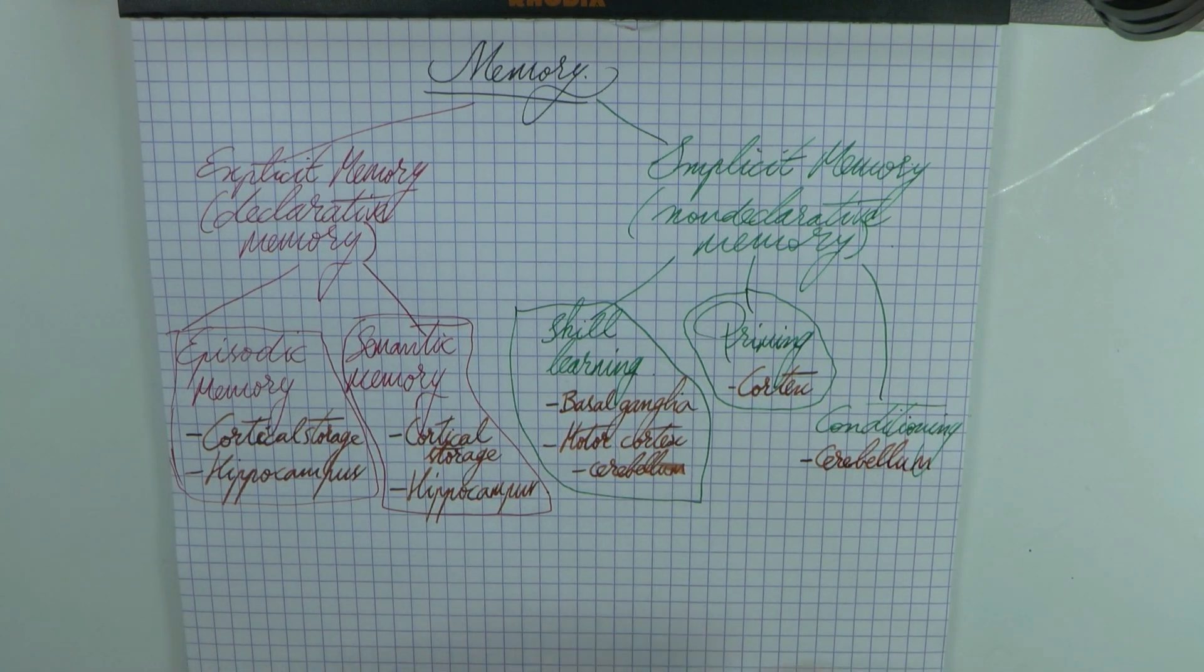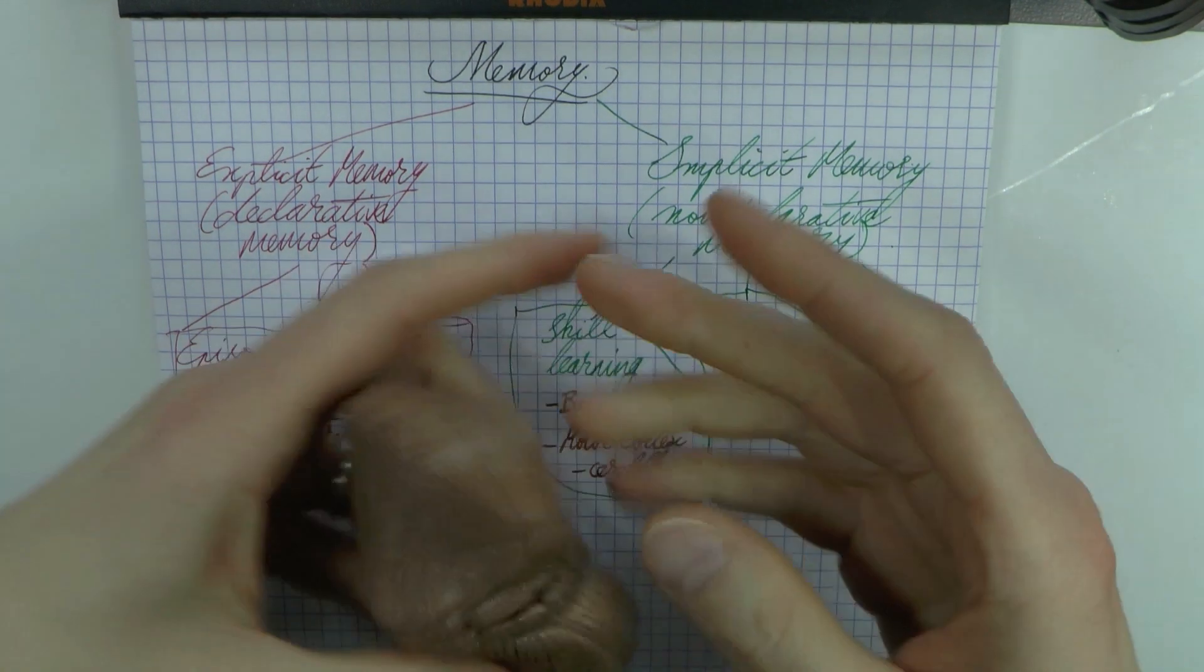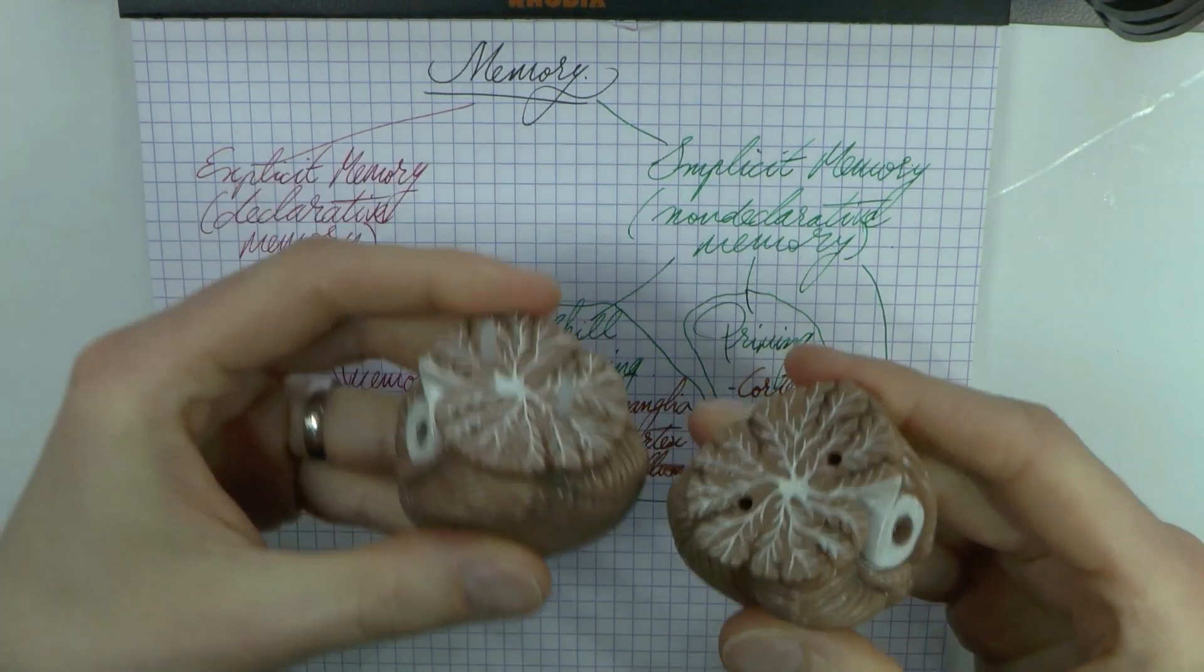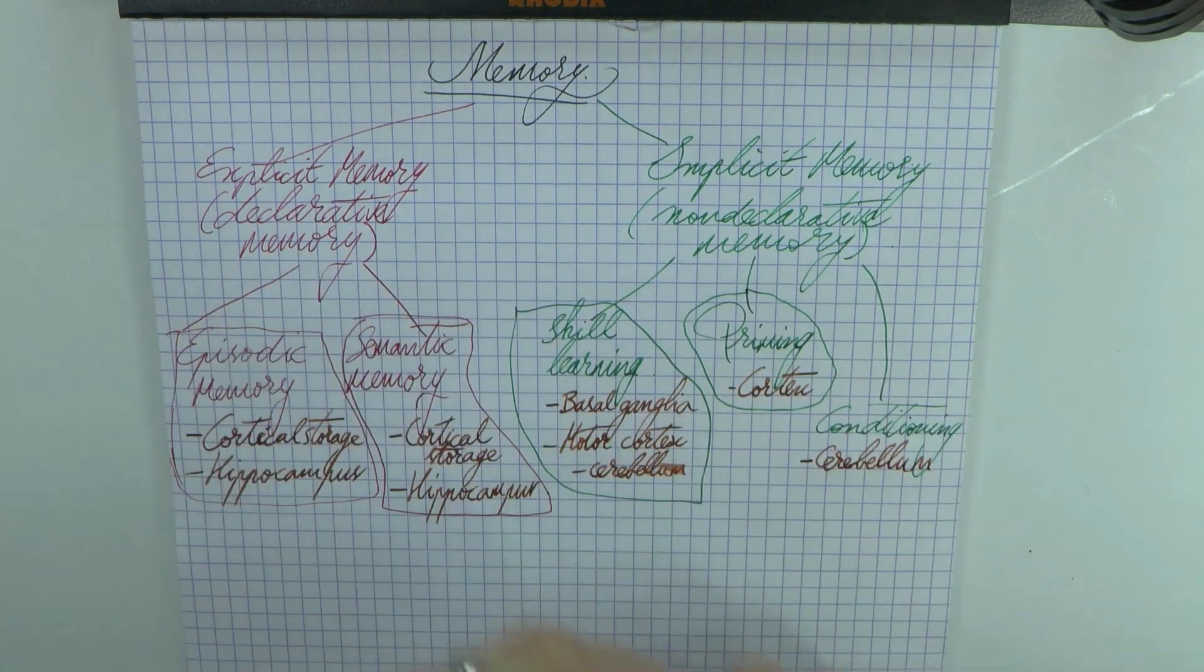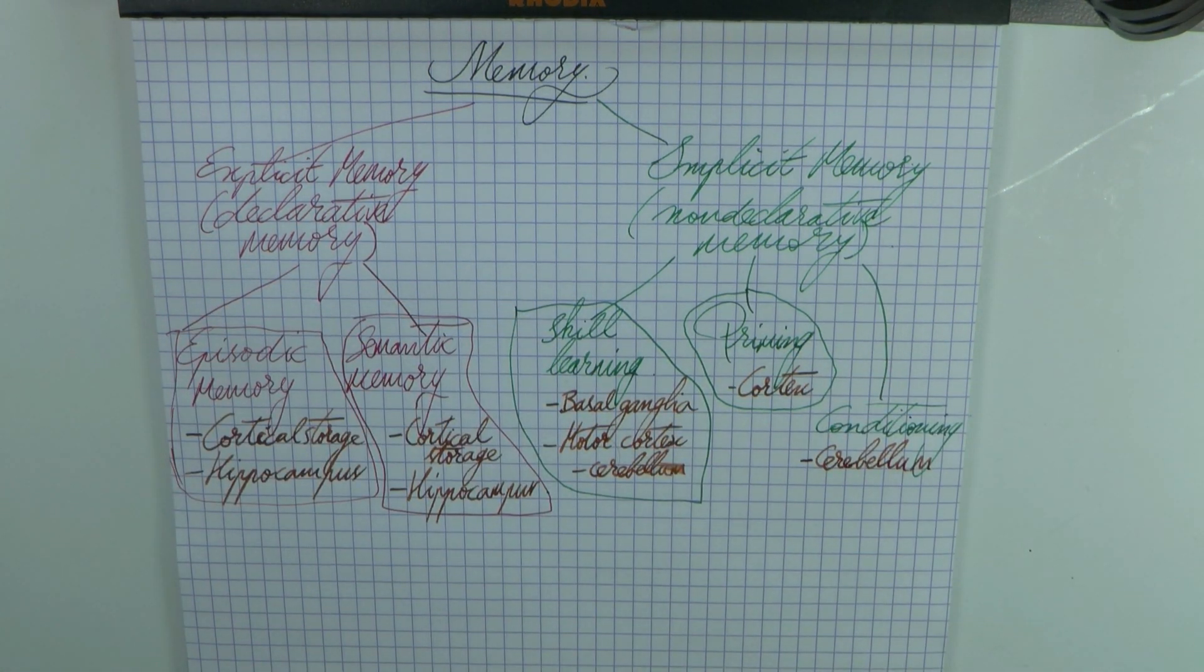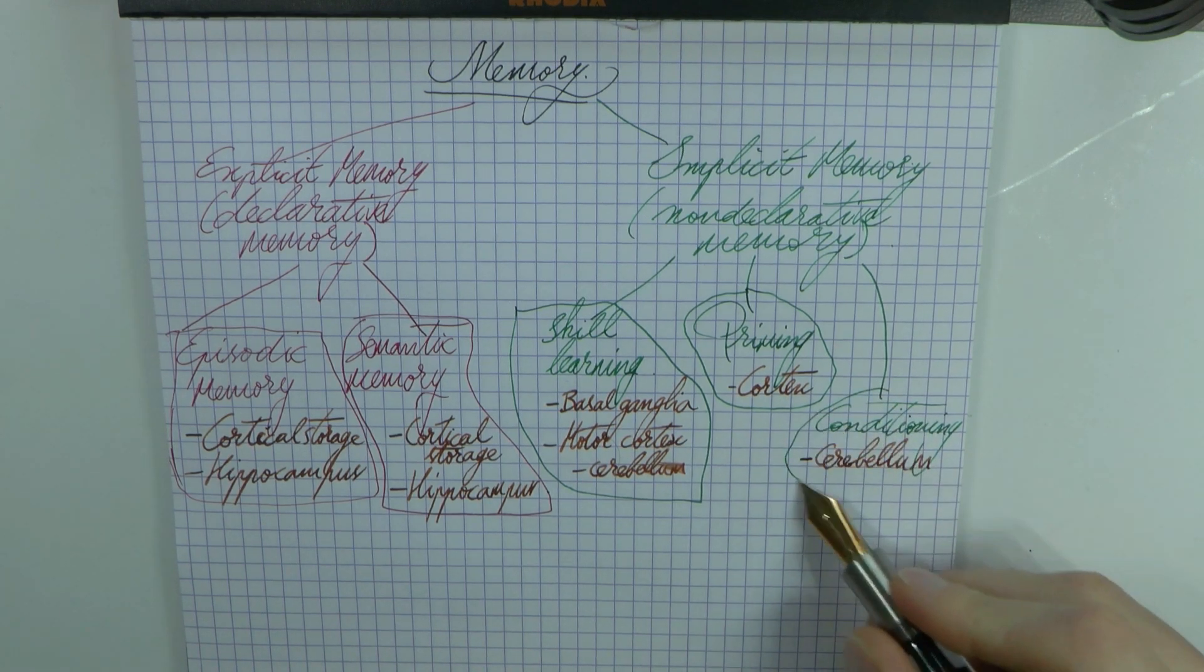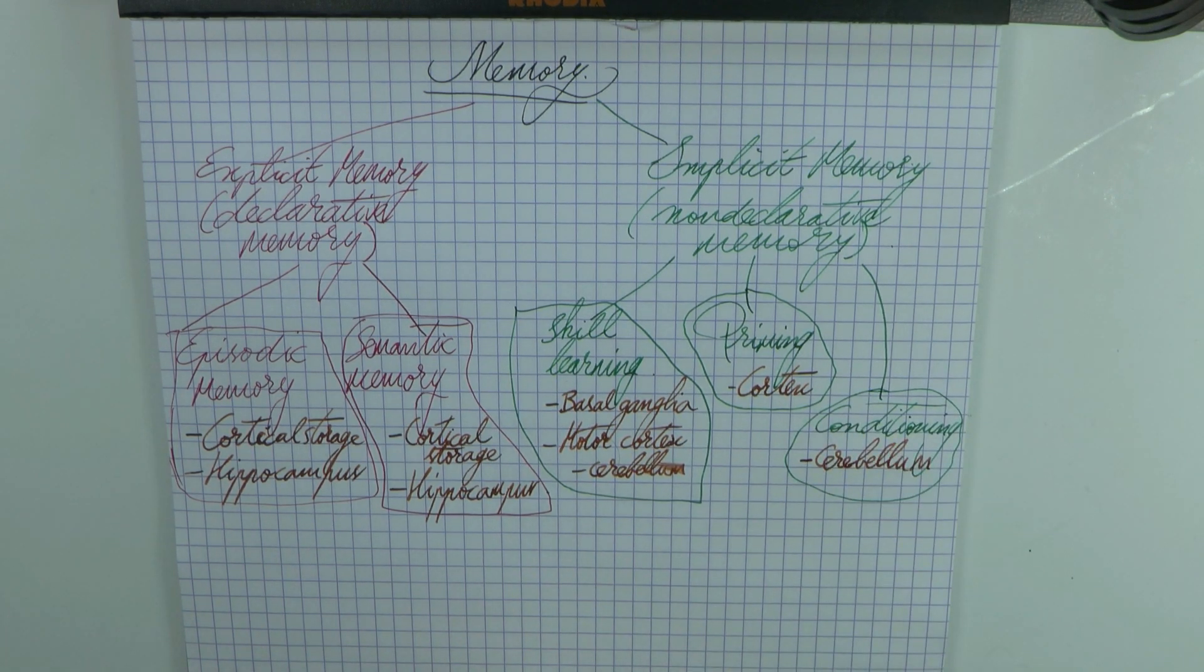And which brain area do we associate with this? Also the cerebellum. Well, we've already seen the cerebellum, but there you go, a nice cerebellum. So we got that. Now we have all these kinds of memories—we have explicit and implicit, we have episodic and semantic, we have skill learning, priming, and conditioning.